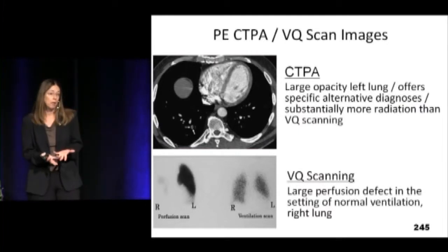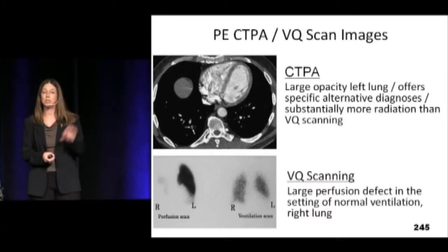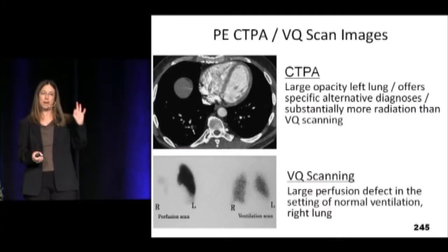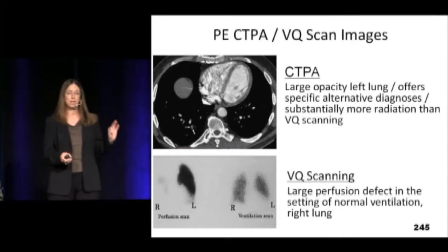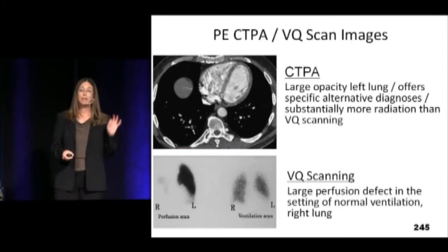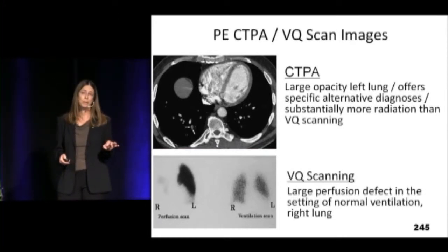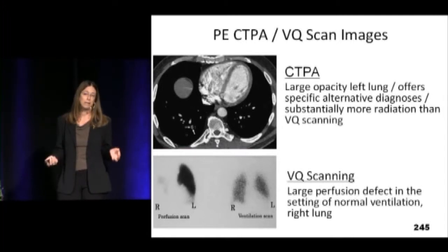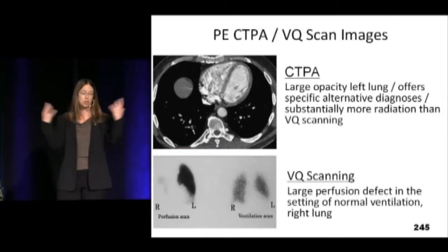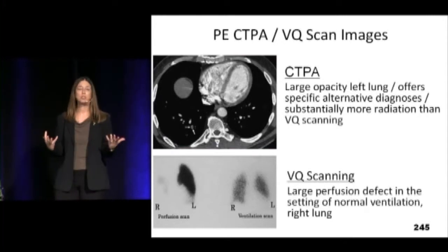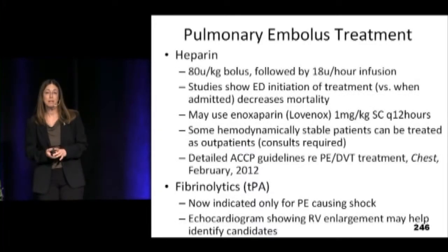Here's what the imaging looks like. The top image is the CTPA, showing a little tiny clot with an arrow pointing at it. The VQ scan is on the bottom. The reality is you only need the perfusion scan — you don't really need the ventilation scan if their chest X-ray is negative. They just inject the isotope, take the pictures, and you're done — just see how the perfusion looks.